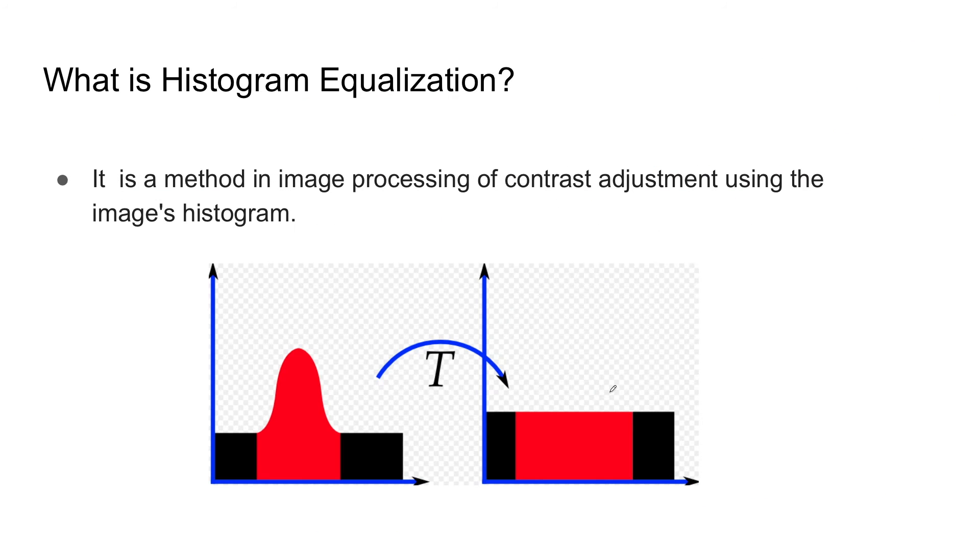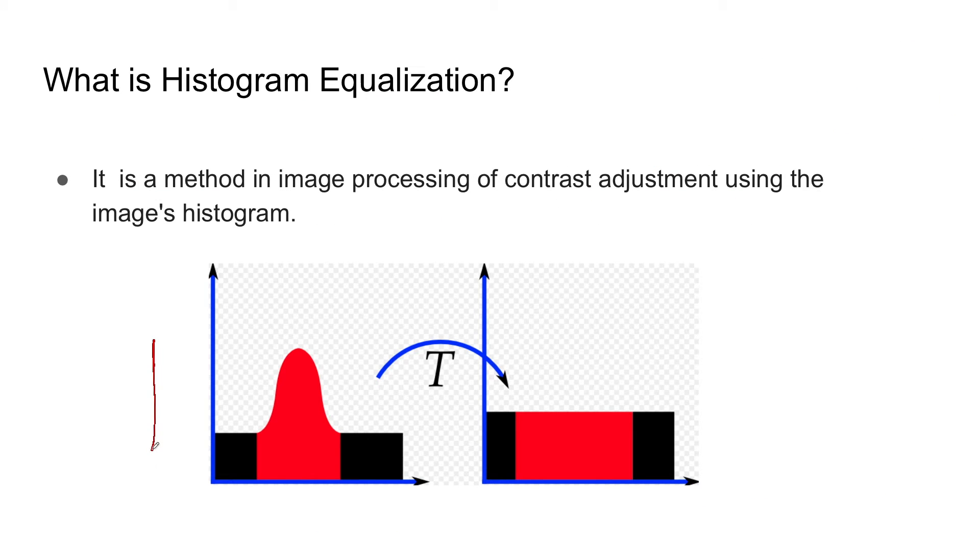We see in this image what exactly happens. That is, it's a method in image processing of contrast adjustment using the image histogram. So this is the histogram we actually had. What it'll do is distribute the intensities so that they will be spread across and not just concentrated at one particular area. So if the image is quite bright it might look dark. If the image is quite dark it'll look bright.